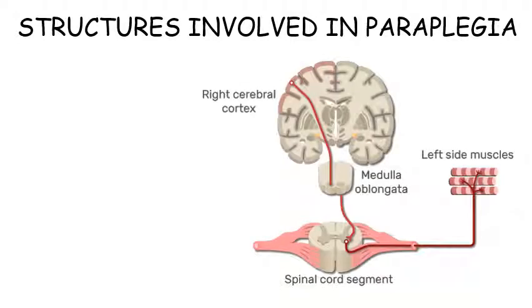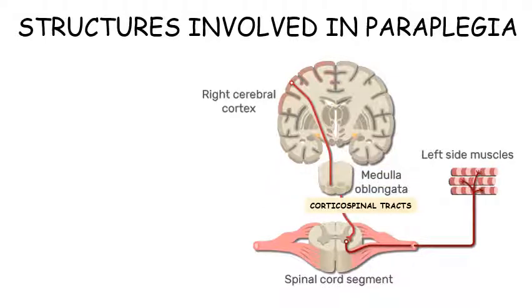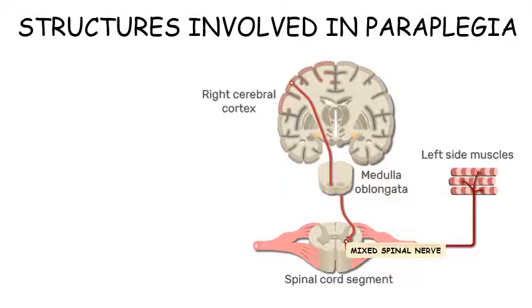The motor pathway starts from the motor cortex in the precentral gyrus of the brain. It continues as the pyramidal tract through the brain stem, and at the level of the medulla oblongata it crosses to the other side, then descends as the corticospinal tract into the spinal cord. The second order neurons start in the anterior horn cells and continue as mixed spinal nerve, then to peripheral motor nerve, which finally supplies the muscle at the neuromuscular junction.